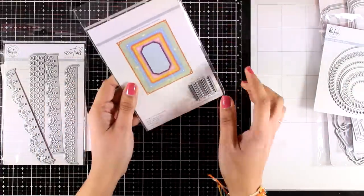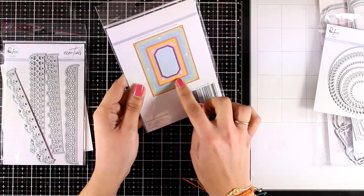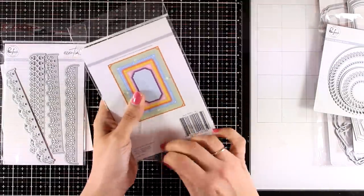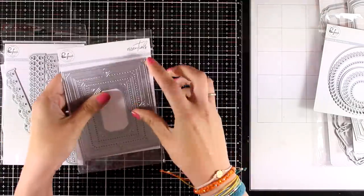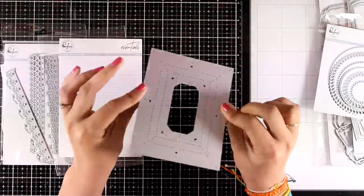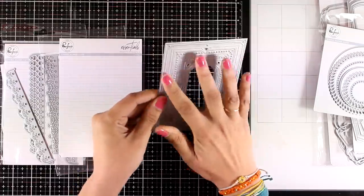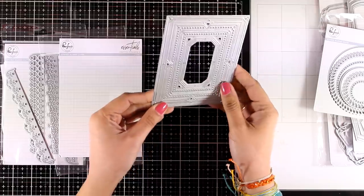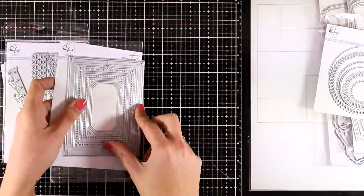This die is called Pretty Frames and it gives you lots of frames that you can use on your projects. I'm going to take it out of the packaging so you can see how unique this one is. It is actually one die, but if you run it through your die cutting machine, you'll end up with a bunch of frames.